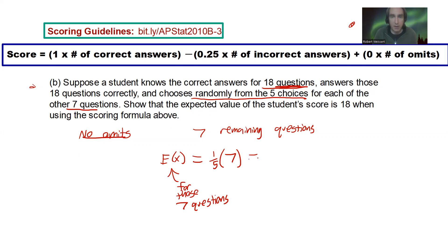So, the expected value for those seven questions is 1.4. Meaning that if you're just guessing randomly from seven questions, you would expect to get 1.4 correct. Okay? So, think about that.